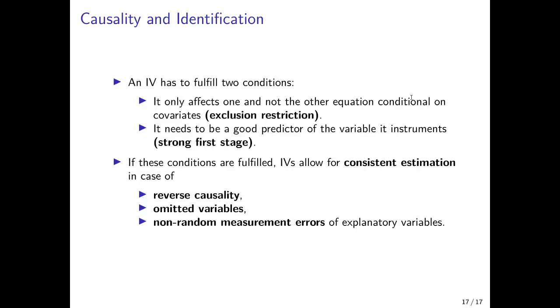Now, a valid instrumental variable has to fulfill two conditions. The first I've already mentioned, it must only shift one of the two curves and not the other. That's the exclusion restriction. So the variable set is excluded from the other equation that we do not want to shift. And that means the variable that we have is basically only correlated with the variable that we change.